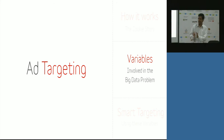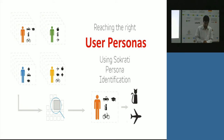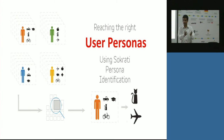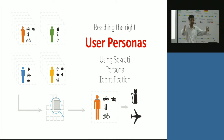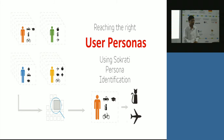That brings me to the second part of the talk — the variables. What are these variables? There are a lot of things involved in how you target a user. When you're doing advertising, you have to know who your target audience is. Facebook offers a lot of options — you can target by age, by interest, by employer, by fans of a page, by your connections and so on.